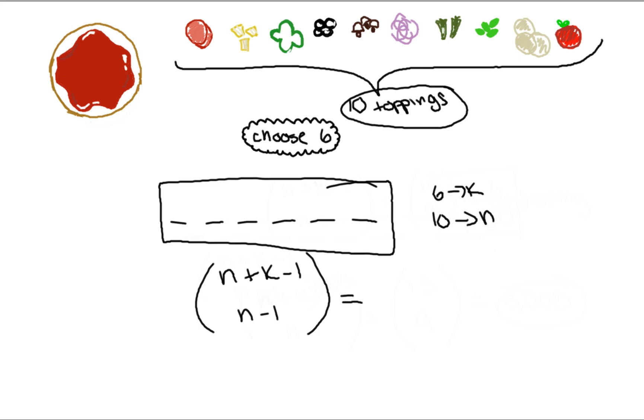This would be n plus k minus 1, or 6 plus 10 minus 1, or 15. And n minus 1 is 10 minus 1, which is 9. So our answer would be 15 choose 9, which is 5,005.